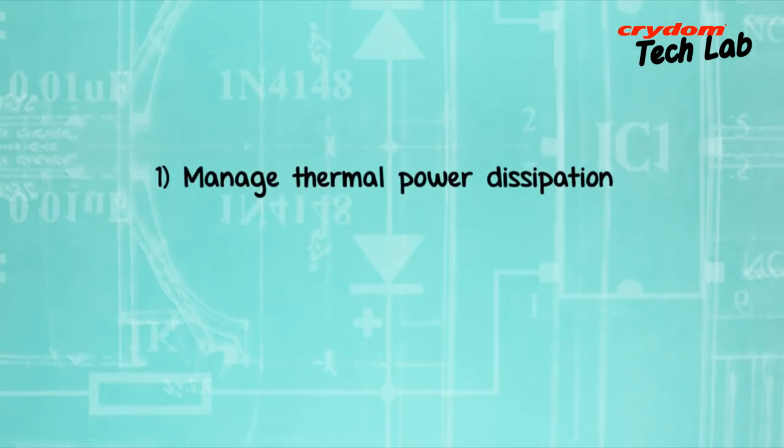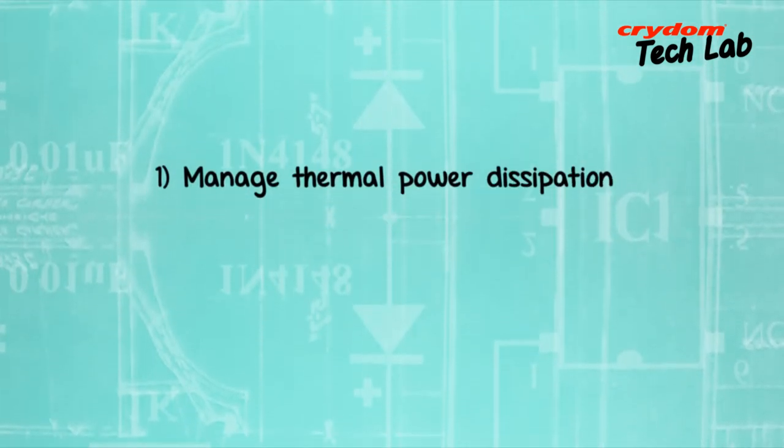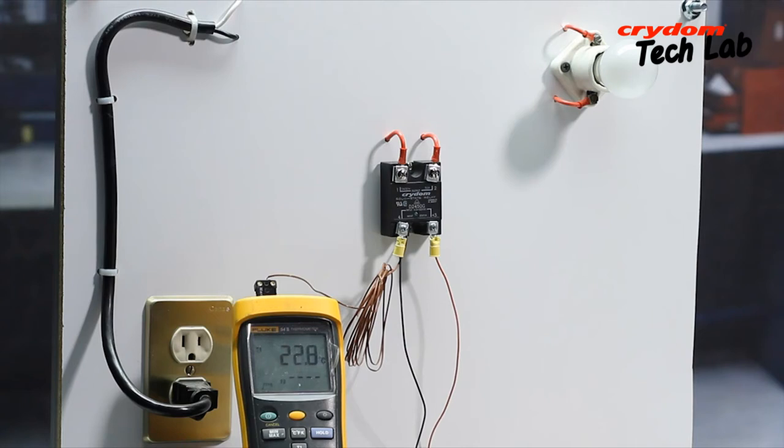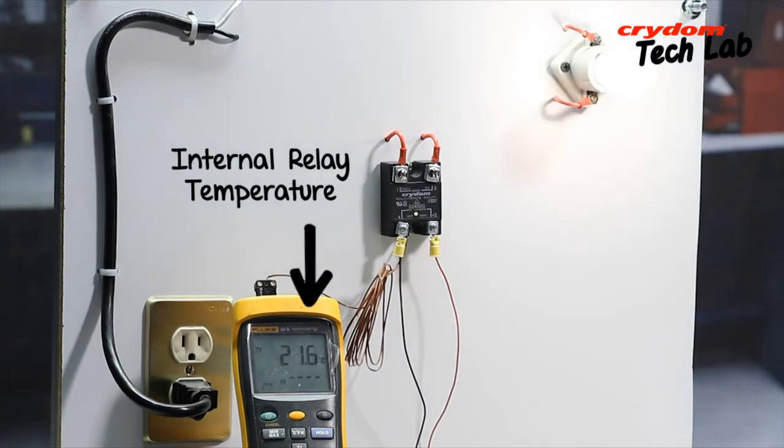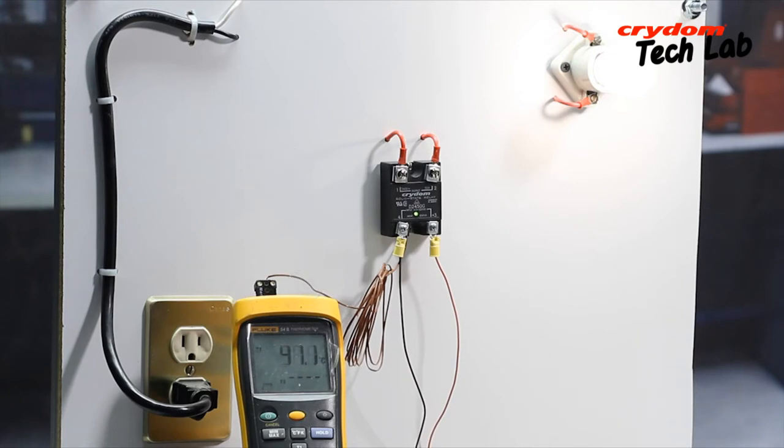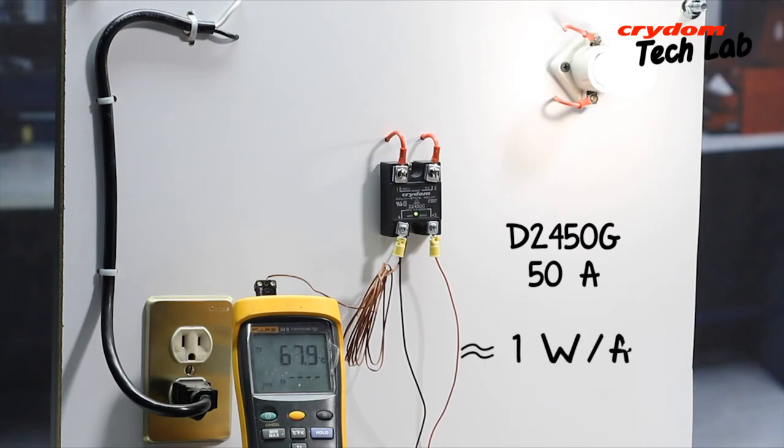The first one is to manage thermal power dissipation. SSRs and SSCs generate thermal power dissipation during the conduction of load current. This power dissipation depends upon the relay selected and its end application, but approximates one watt per ampere of current through the load.